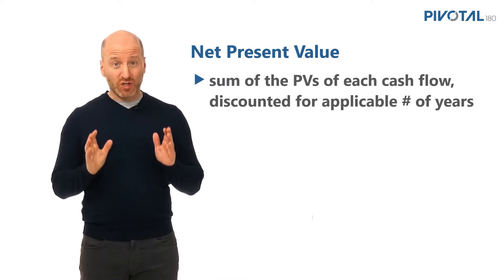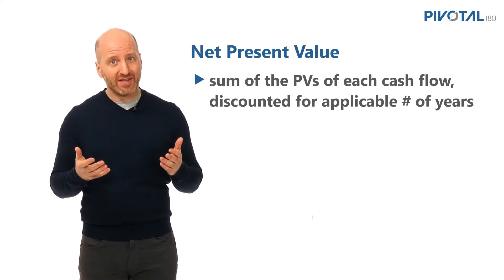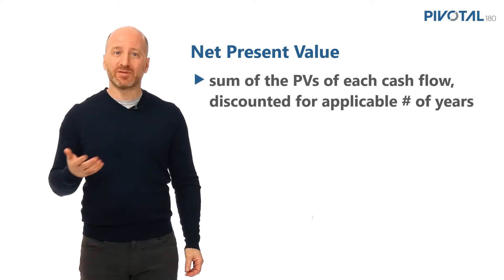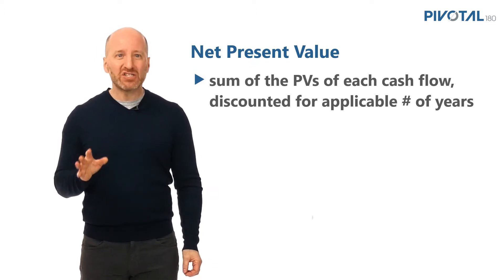In the demo file, we calculated discount factors year by year and then discounted all future cash flows to the present one at a time, then added all of those present values together using the SUM function to produce the NPV. That approach totally works, but it's inefficient. Not surprisingly, Excel has a built-in function that eliminates a lot of steps and makes it much easier.